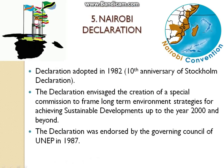The fifth one is the Nairobi Declaration, adopted in 1982. This declaration was held to create a special commission to frame environment strategies for achieving sustainable development up to the year 2000 and beyond. The declaration was endorsed by the Governing Council of the United Nations Environment Programme in 1987.